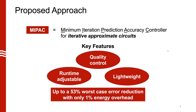Our proposed approach is MyPack, which stands for Minimum Iteration Prediction Accuracy Controller for Iterative Approximate Circuits. Key features: it provides finer-grain quality control with more settings than originally allowed by the circuit, by predicting the minimum number of iterations. It's lightweight — using combinational logic predictors instead of traditional ALU-based approaches. It's also runtime-adjustable, with multiple quality settings the user can select between. Together, these features show a 53% reduction in worst-case error with only a 1% energy overhead for the predictor — very negligible.